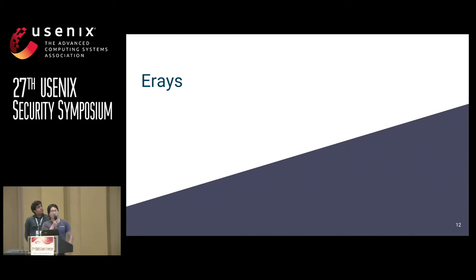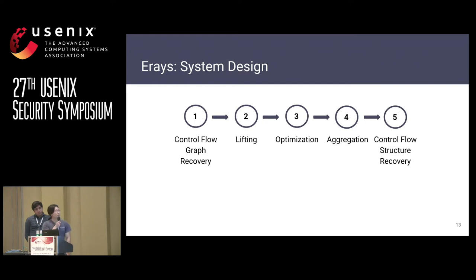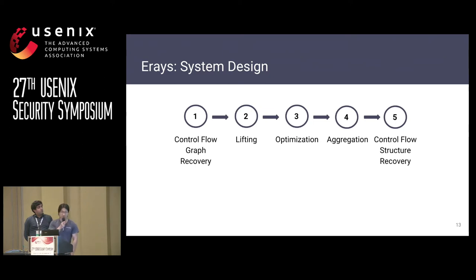To actually study and understand these contracts, we built Erase, where we utilize various program analysis and program transformation techniques to translate EVM bytecode into more readable representations. Erase processes the bytecode in five sequential stages: first, we recover the control flow graph; then we lift the stack-based operations into a register-based representation; we then optimize upon the derived representation; afterwards, we aggregate our representation into a more compact format; and eventually, we recover the control flow constructs from the contract.